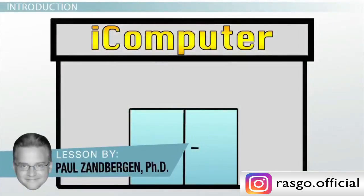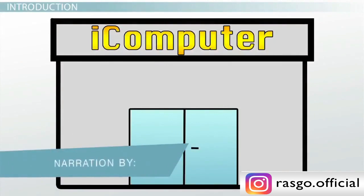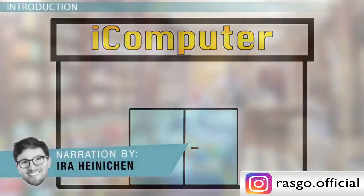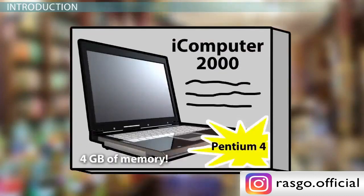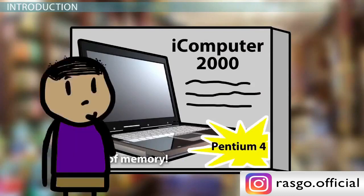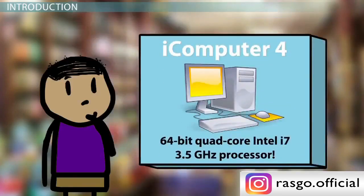You're shopping for a new computer in an electronics store, trying to make sense of the technical specifications. One computer has a 64-bit quad-core Intel i7 3.5 GHz processor. Sounds impressive, but what does it really mean? The last computer you bought had a sticker that said Pentium 4. The computer was getting sort of slow, but why would you need a 64-bit quad-core? Why exactly is this better than the processor in your old computer?